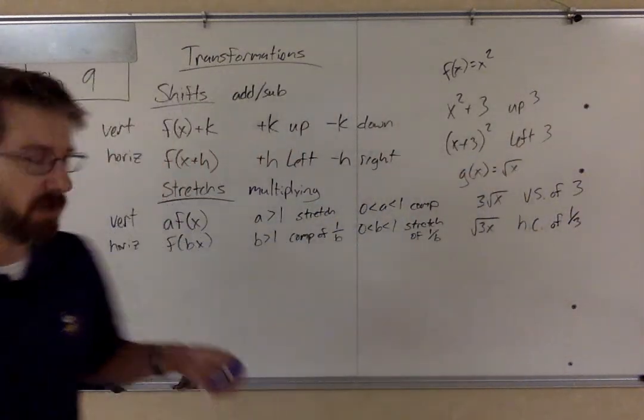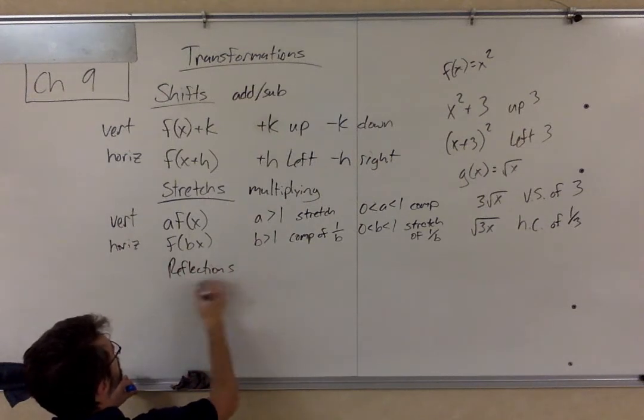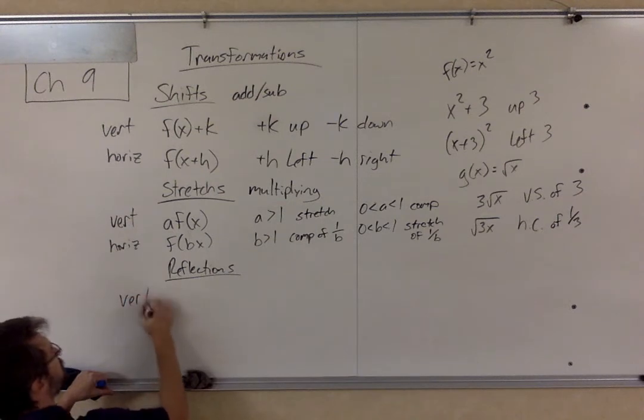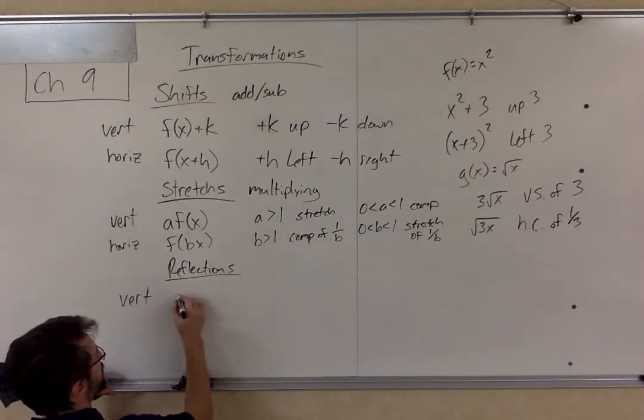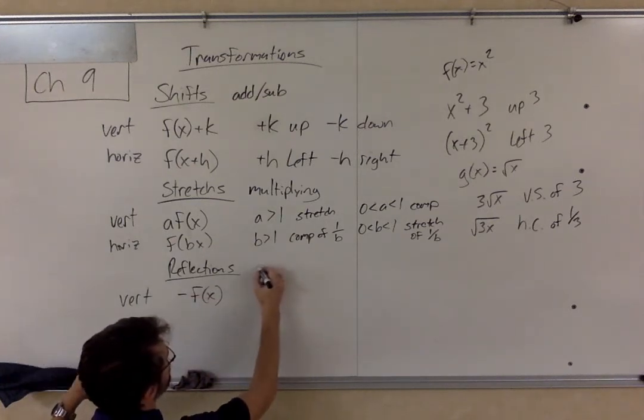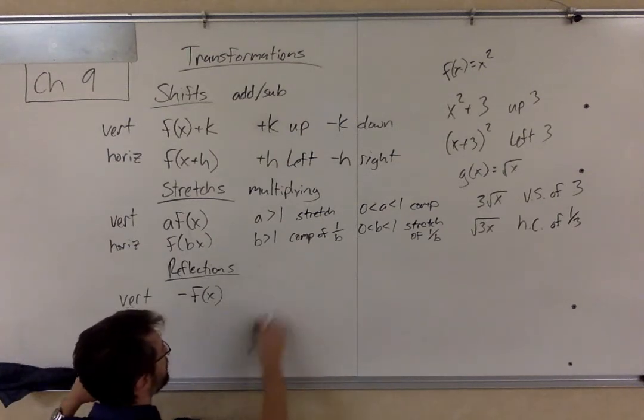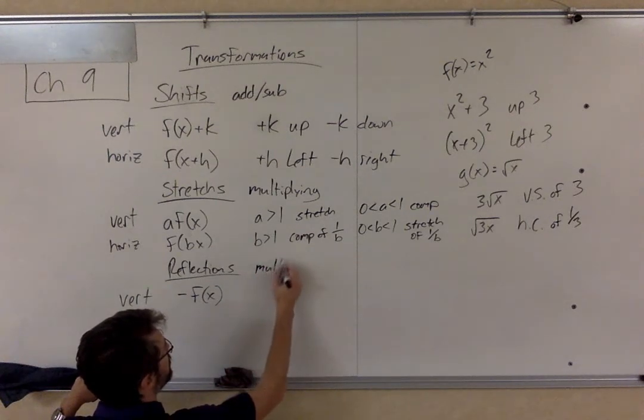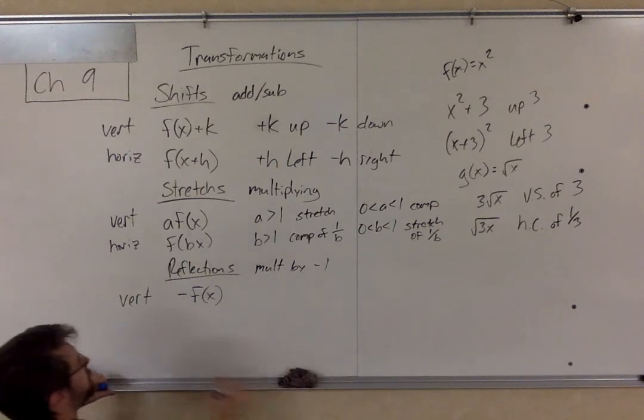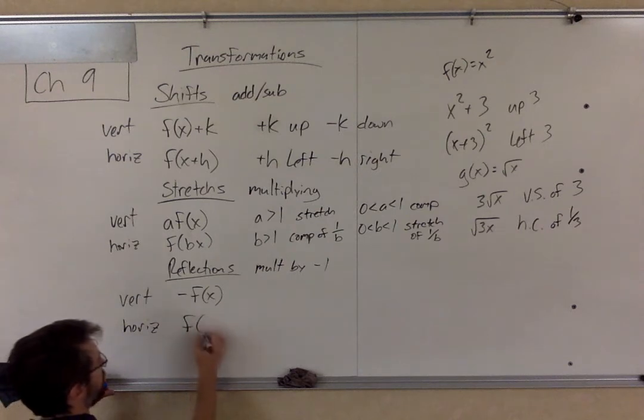All right, then the last one is the easy one, reflections. So vertical, it is if the minus is on the outside. So this is like times a negative 1. What I meant to say is, mult by negative 1. So basically, if you see a negative symbol, and it's not a subtraction. Horizontal, that would be if it is on the inside.